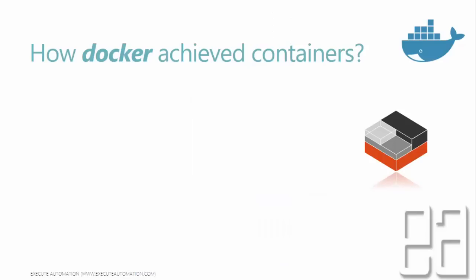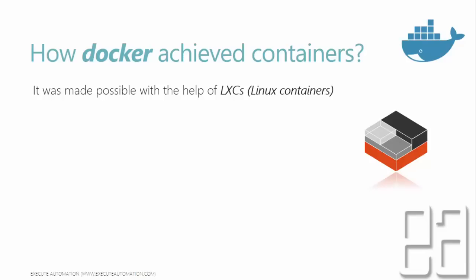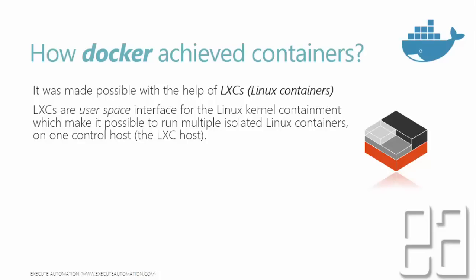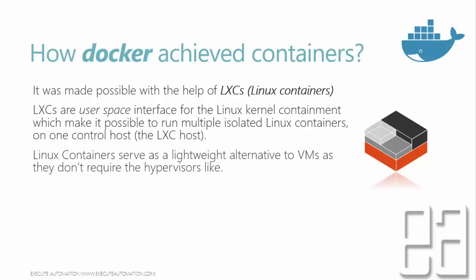How did Docker achieve this container approach? Way back, it was made possible with the help of LXC, otherwise called Linux containers. There is a concept of Linux containers that has been around for a long time, and Docker made use of that. LXC is a user space interface for Linux kernel containment, which makes it possible to run multiple isolated Linux containers on one control host — the LXC host. Linux containers serve as a lightweight alternative to VMs, as they don't require a hypervisor like VirtualBox, KVM, or Xen. The Linux kernel itself is shared among all containers, and each container acts as an independent operating system.